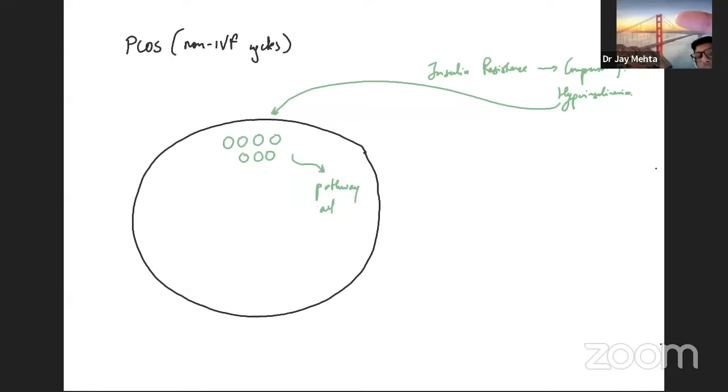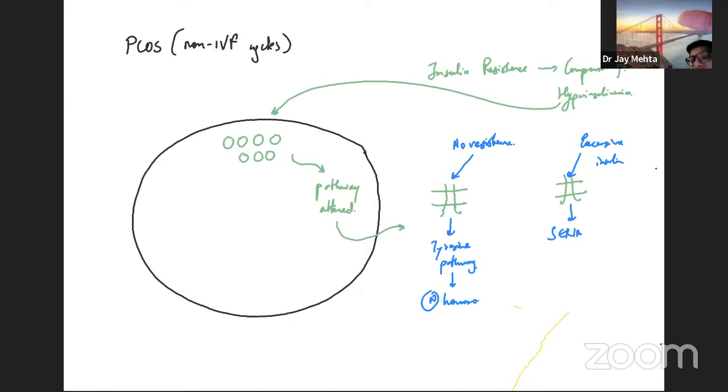Unfortunately, whenever there is this compensatory hyperinsulinemia, this has a significant effect onto the ovary. When we look at the ovary and try to look at the cortex, at these small follicles inside the ovary, this alters this entire pathway. If you look at the receptors, this is just one minute of microbiological studies. Inside this, whenever the insulin is normal, whenever there is no resistance, the body normally activates something called a tyrosine pathway through the receptors, and this produces all the normal hormones.